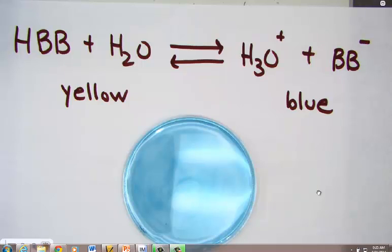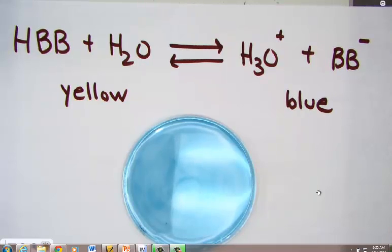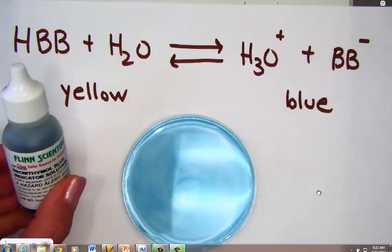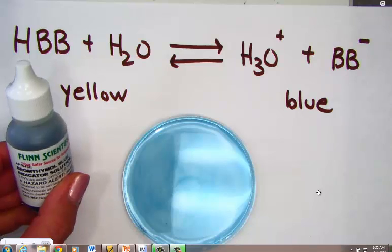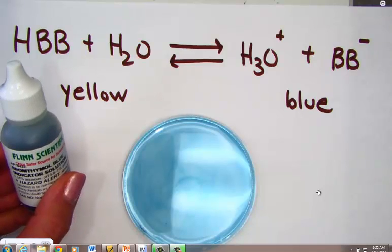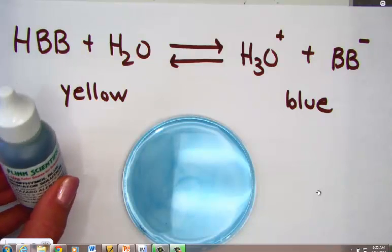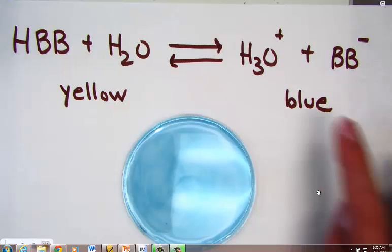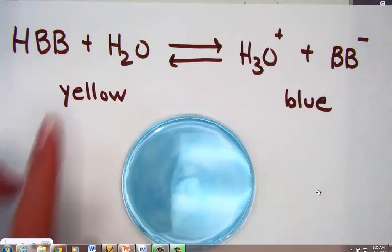In this demonstration, we will be modeling Le Chatelier's principle with an acid-base indicator called bromothymol blue. Bromothymol blue has two colors we will observe. We are now on the blue position; we will also observe yellow.